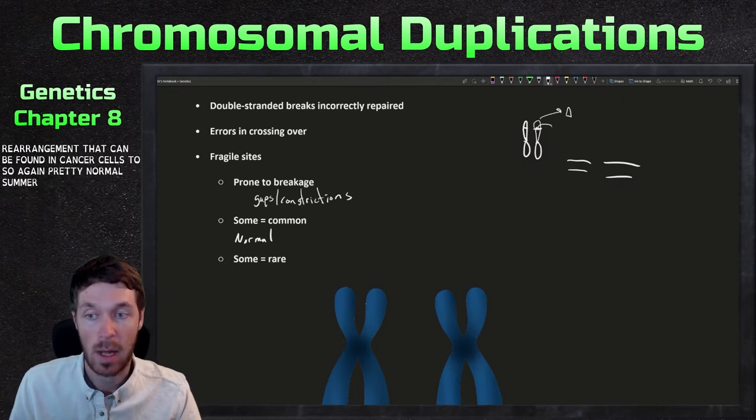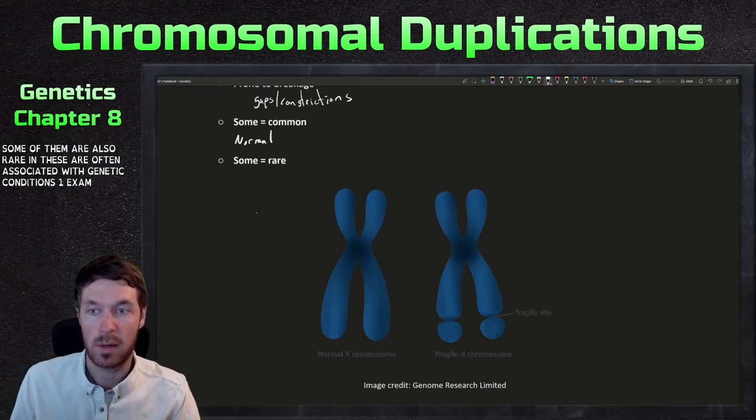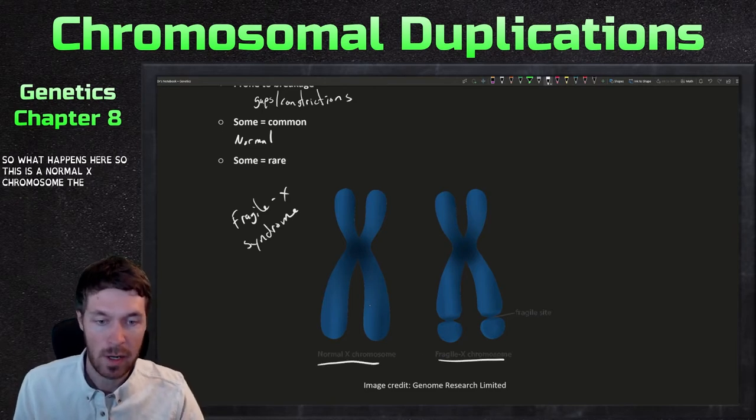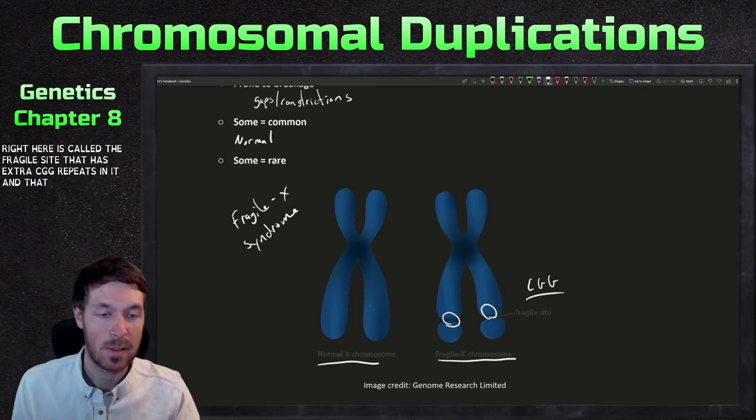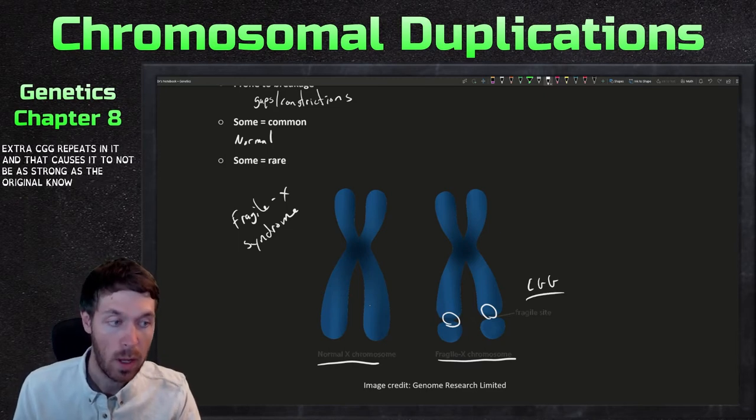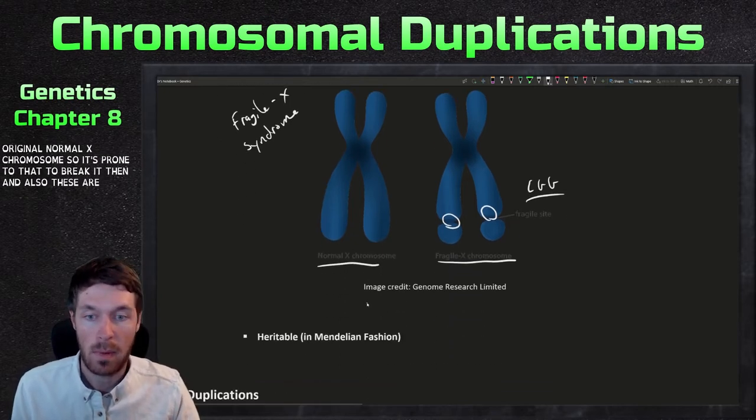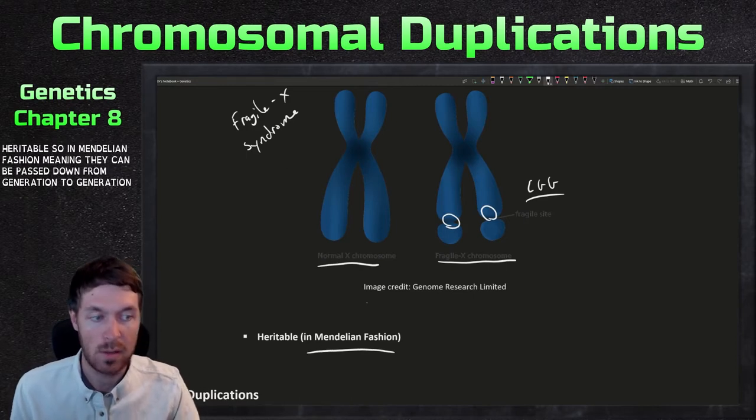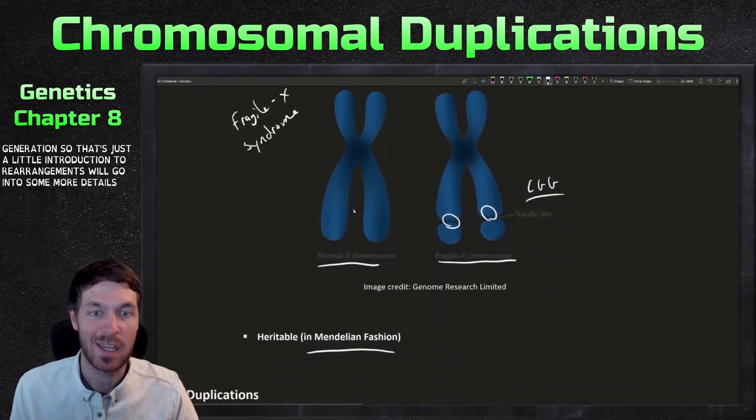So again, pretty normal. Some of these are common, but some of them are also rare. And these are often associated with genetic conditions. One example here is fragile X syndrome. So what happens here, this is a normal X chromosome. This is a fragile X chromosome. And right here is called the fragile site. The fragile site has extra CGG repeats in it. And that causes it to not be as strong as the original normal X chromosome. So it's prone to that breakage then. And also these are heritable. So in Mendelian fashion, they can be passed down from generation to generation.